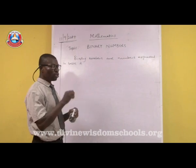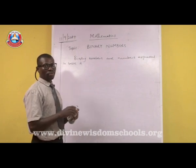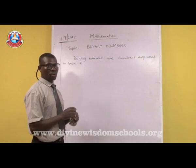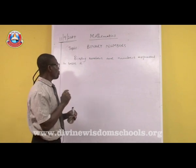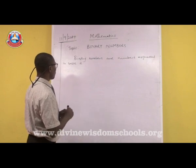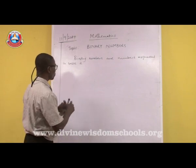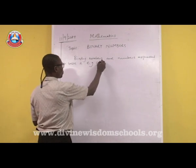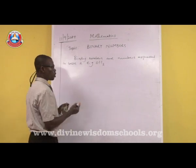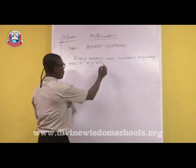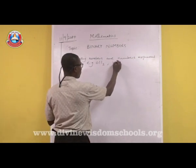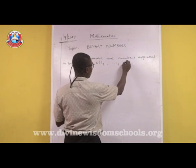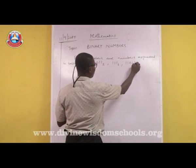What I mean is that none of the digits of the number must be greater than the base or equal to the base. For instance, if I'm expressing any number in base 2, we have something like 011 base 2, which is possible. We also have 111 base 2, or 11011 base 2.